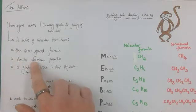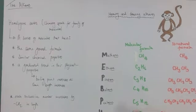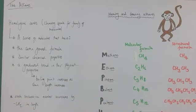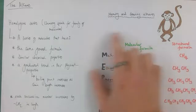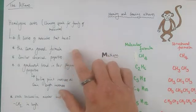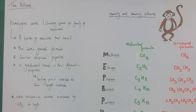They have similar, not the same, but similar chemical properties, and a graduated trend in their physical properties. For example, their boiling point increases as their chain length increases. Each successive member of the family should increase by CH2 in length as we ascend the series. To recap: same general formula, similar chemical properties, a graduated trend in physical properties such as boiling point increasing with chain length, and each successive member increases by one carbon and two hydrogens, CH2.